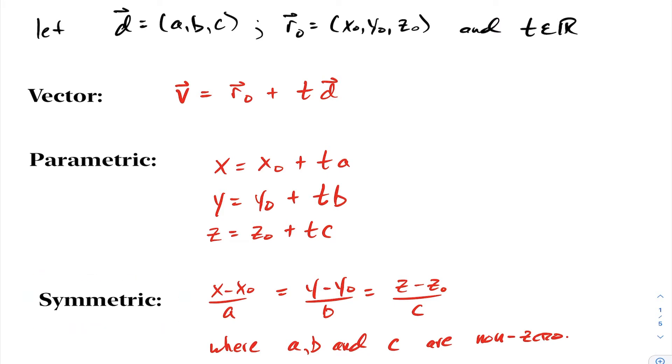Essentially what you do to express something in symmetric form is, if you are in parametric form for instance, you just isolate for t for each one of these. Notice if I isolate for t in equation one I'm going to get this equation. If I isolate for t in equation two I will get my y minus y0 divided by b, and if I isolate for t in equation three we will get our z minus z0 divided by c.